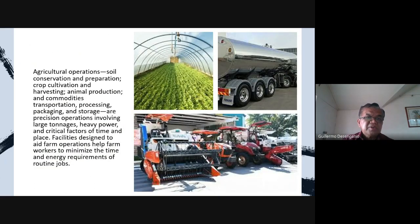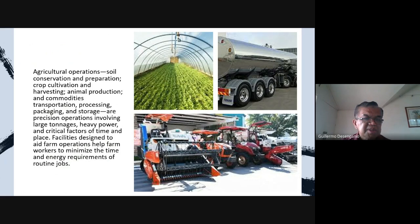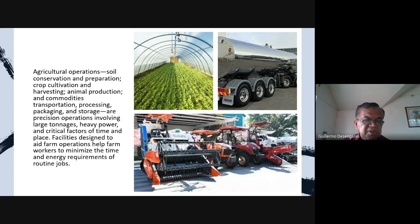Agricultural operations — soil conservation and preparation, crop cultivation and harvesting, animal production, and commodities transportation, processing, packaging, and storage — are precision operations involving large tonnages, heavy power, and critical factors of time and place. Facilities designed to aid farm operations help farm workers minimize the time and energy requirements of routine jobs.